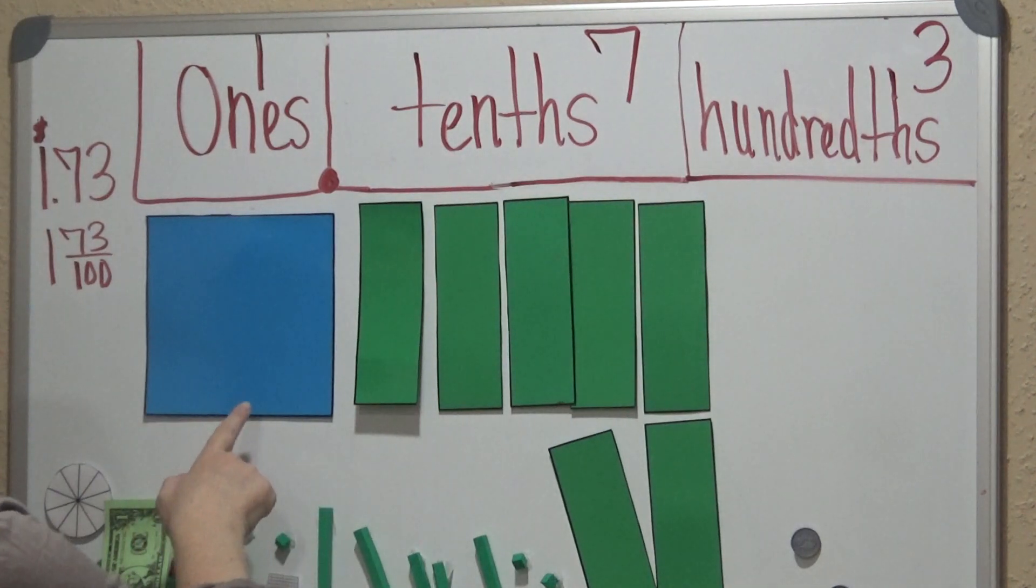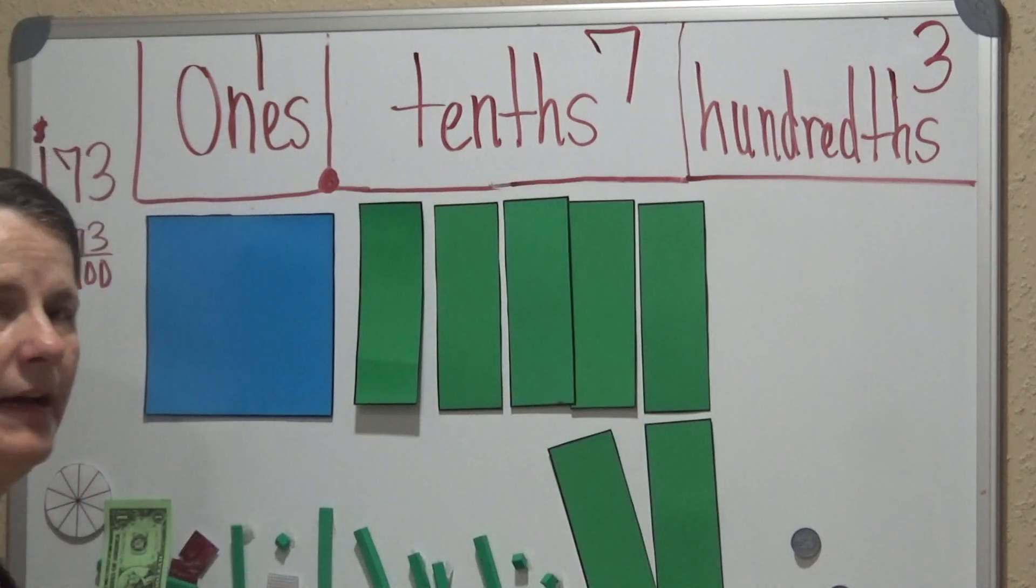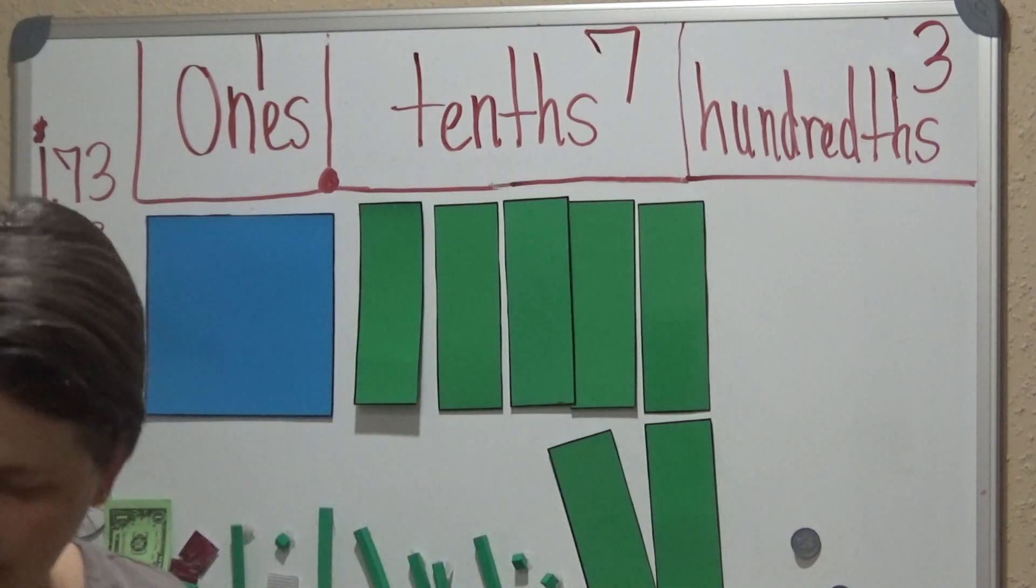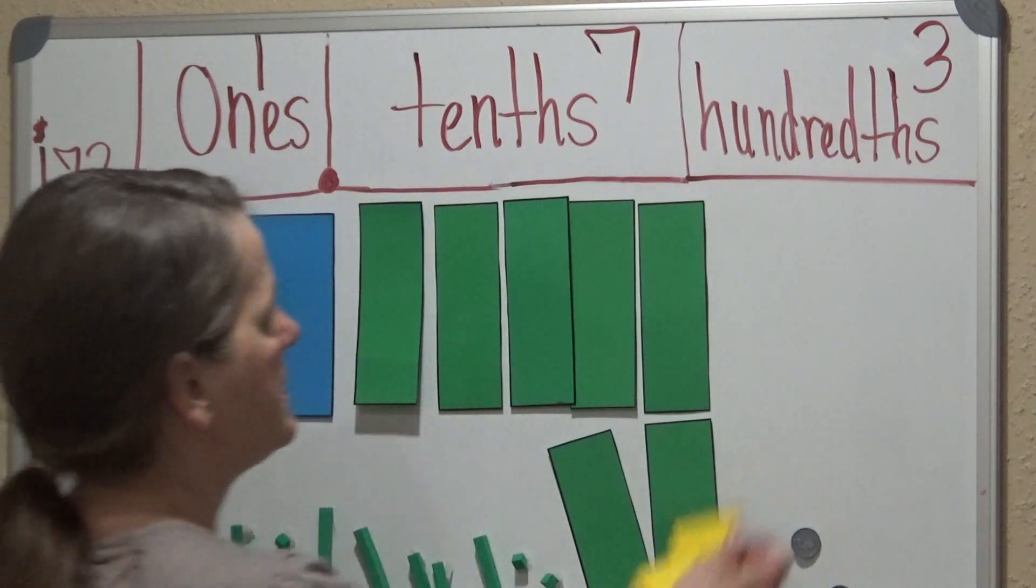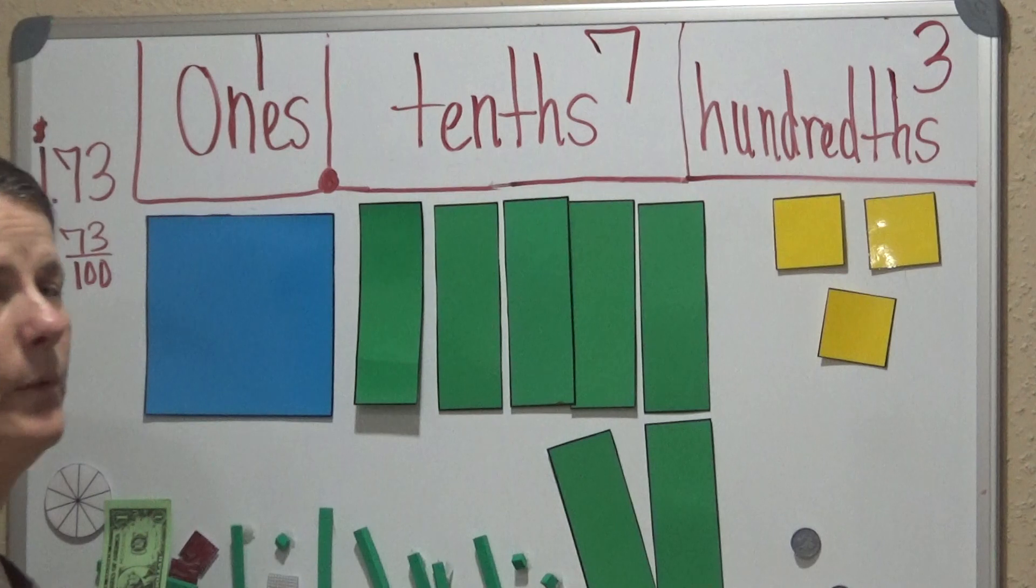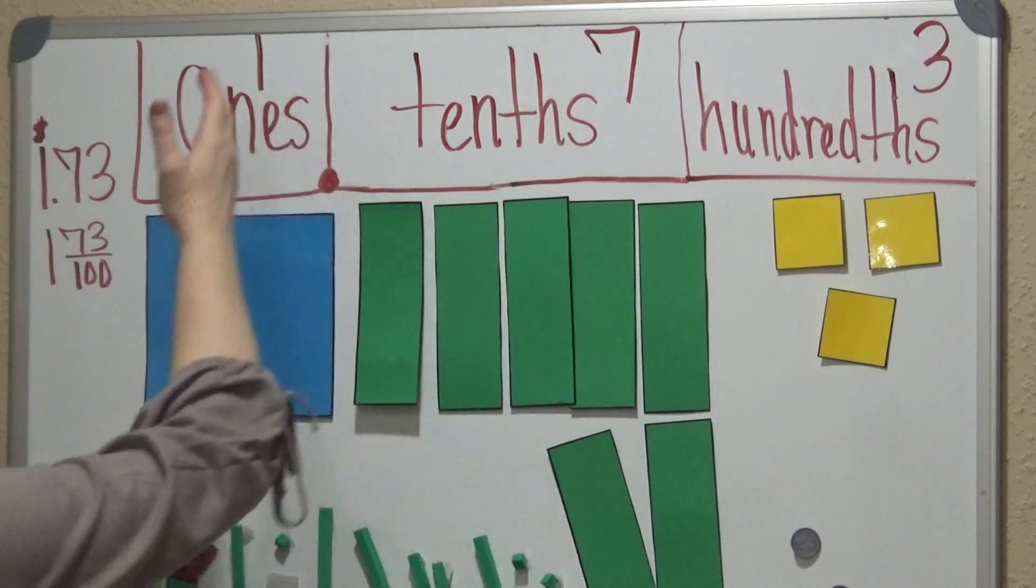So that's 100 pennies, which is $1. 1, 2, 3, 4, 5, 6, 7. That's 100 pennies, which is $0.70. And then 3 units, which is 1, 2, 3. In other words, 3 pennies, 7 dimes, and $1.